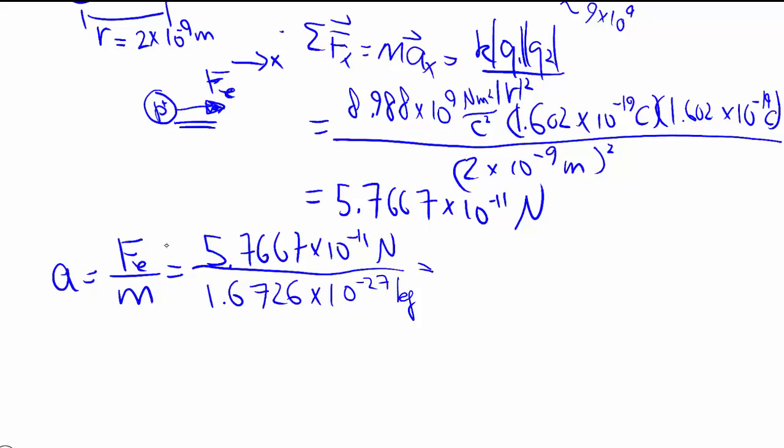Newton divided by kilogram, we get meters per second squared. And as you can see, it's very, very large. So that's why bare charges, like a singular proton flying in space, will get affected by other charges really easily. And they will speed away from each other.